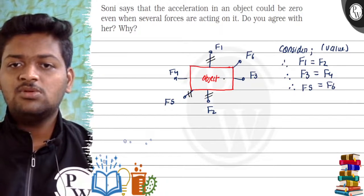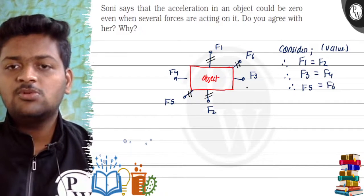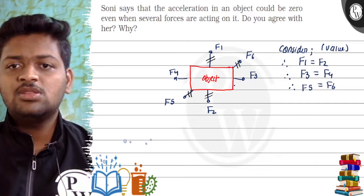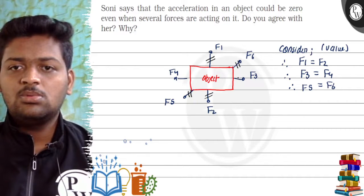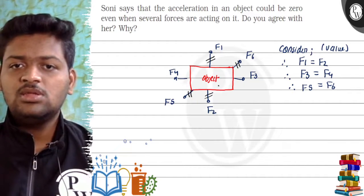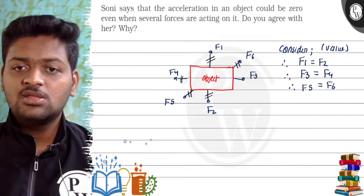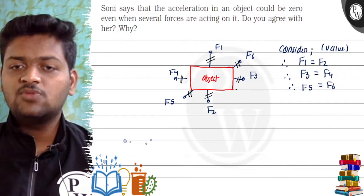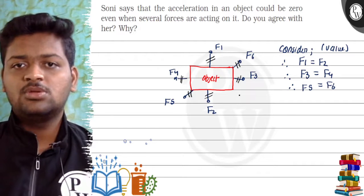Again, since F5 is equal to F6, this will cancel both these and there will be no acceleration and the object will remain stationary, since there will be no acceleration due to these two forces being equal and opposite.